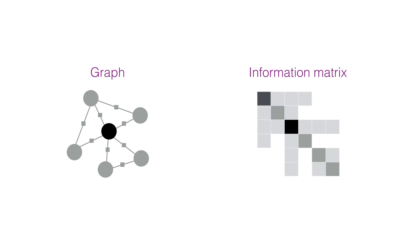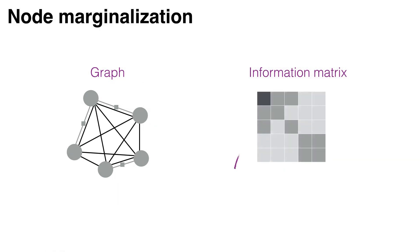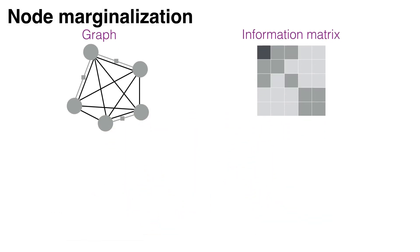In general, the only way of removing a node without loss of information is marginalization. However, it produces a dense and not relinearizable result, undermining efficiency and accuracy.